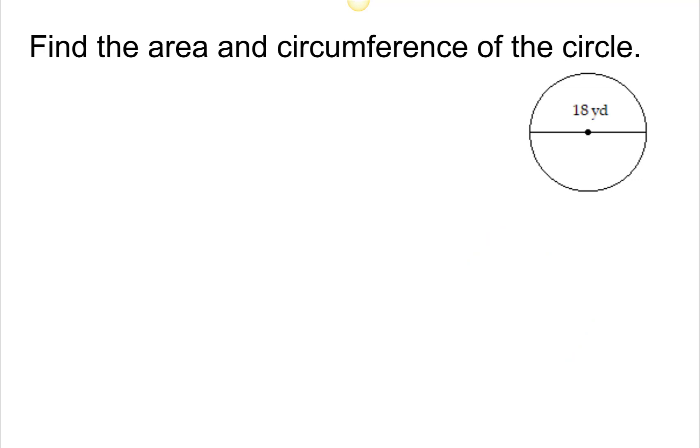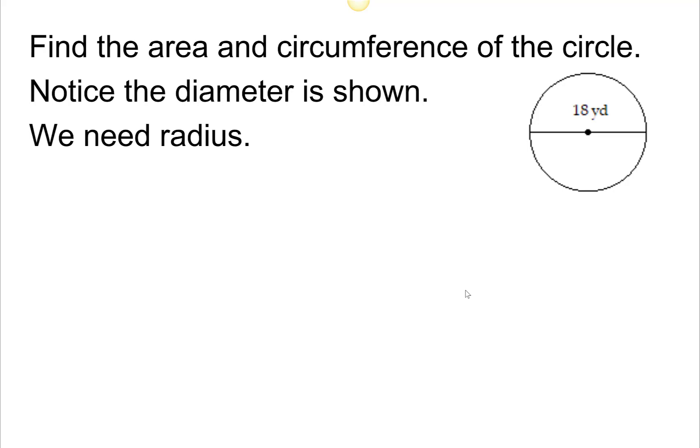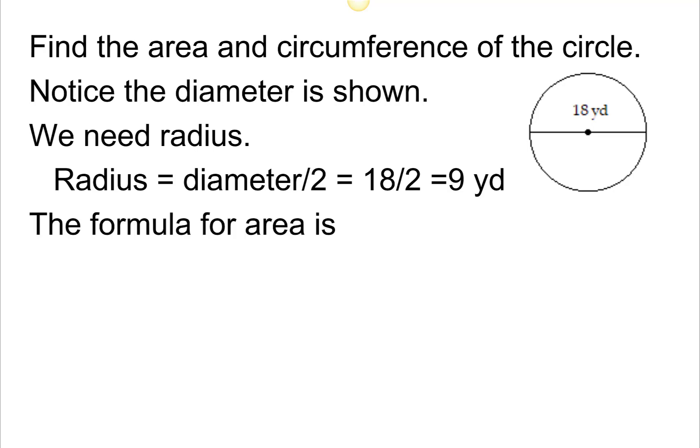Find the area and circumference of this circle. We were given the diameter, but our formulas use the radius, so we're going to divide the diameter by 2 to get the radius, which is 9 yards. The formula for the area is pi r squared. I'm going to substitute in 9 yards for the radius squared, get 81, and then multiply by pi using the pi key on my calculator, or 3.14 for an approximation.